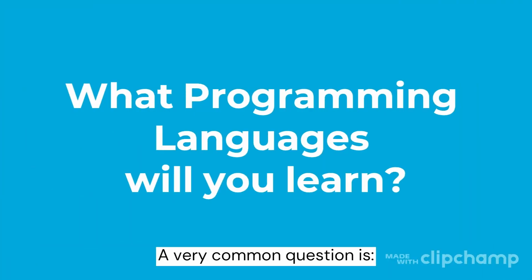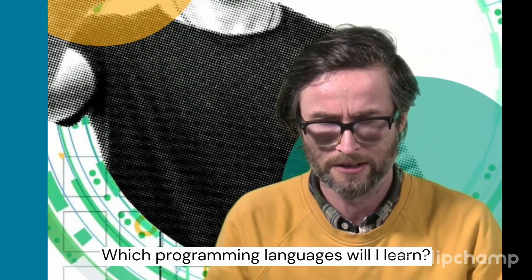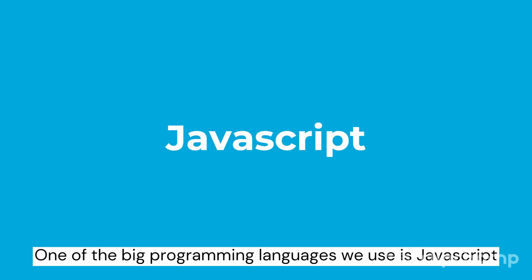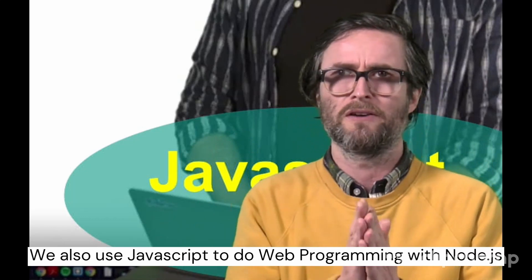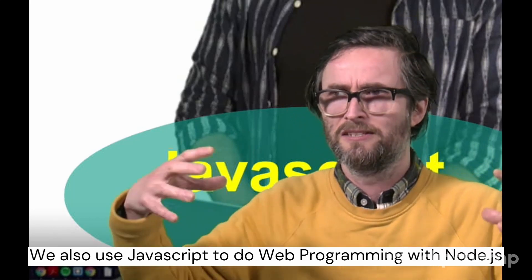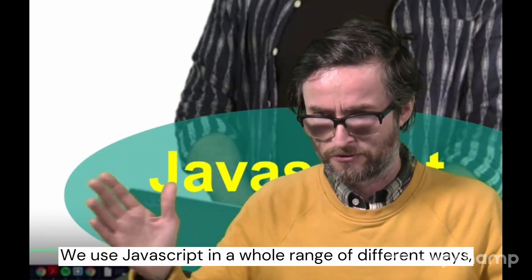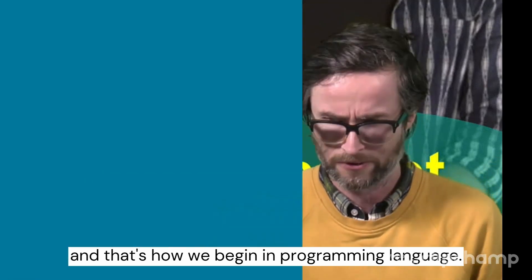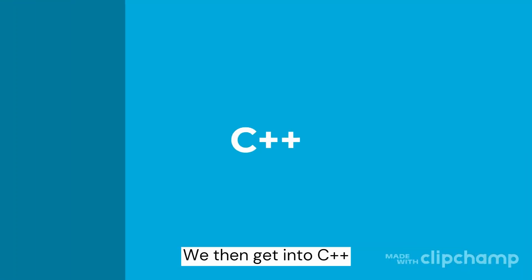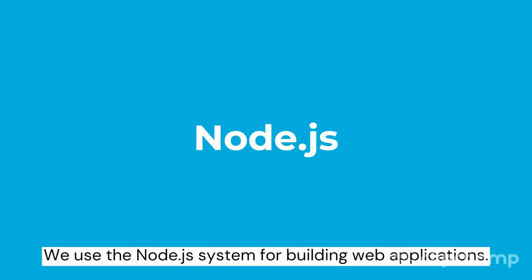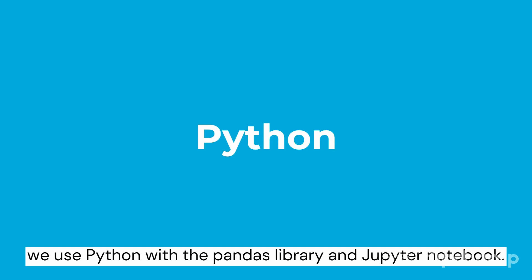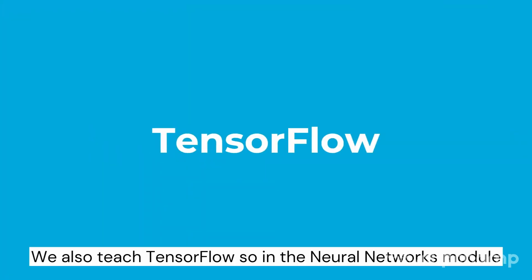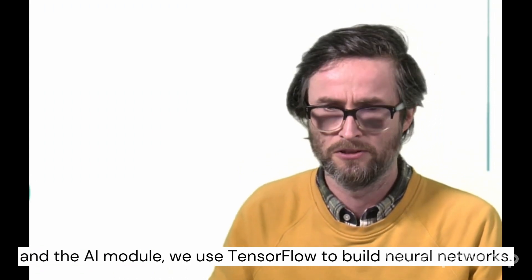A very common question is which technologies and programming languages will I learn? One of the big ones is JavaScript — we use it with Processing or P5 for 2D graphics, in web programming with Node.js, and in mobile development with React. We then get into C++. For machine learning and data-oriented modules, we use Python with the Pandas library and Jupyter Notebook. We also teach TensorFlow — in the neural networks and AI modules we use TensorFlow to build neural networks.